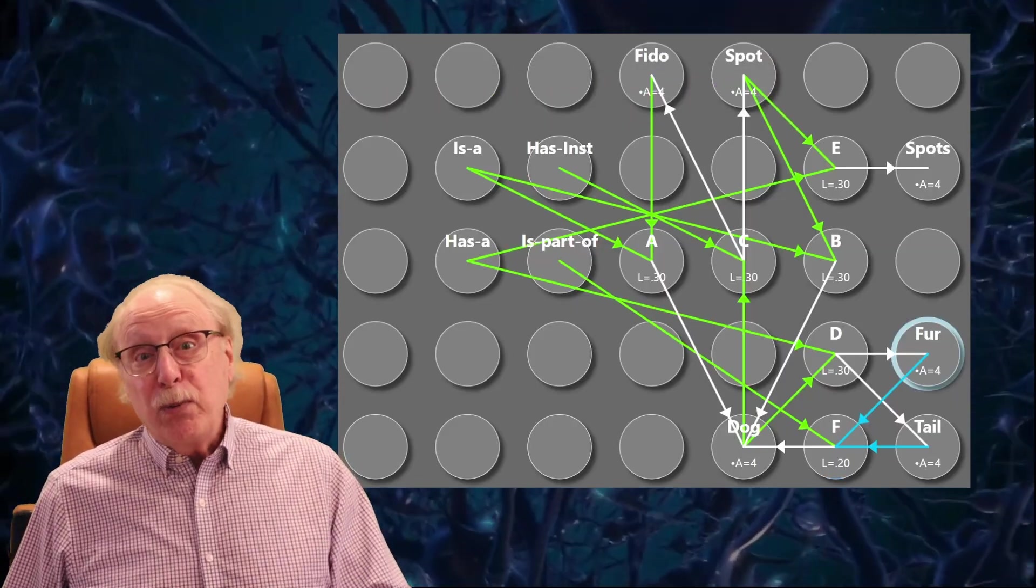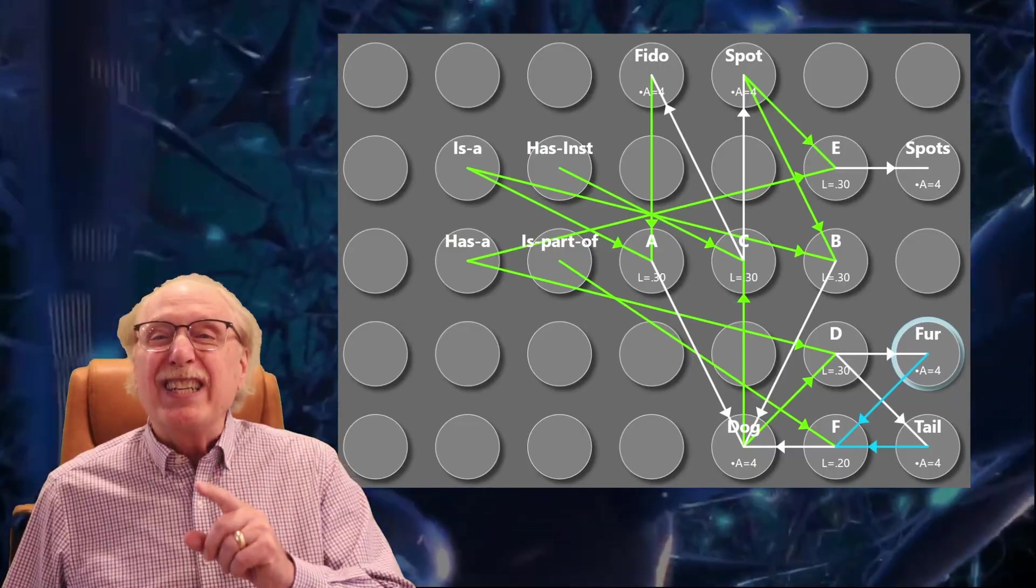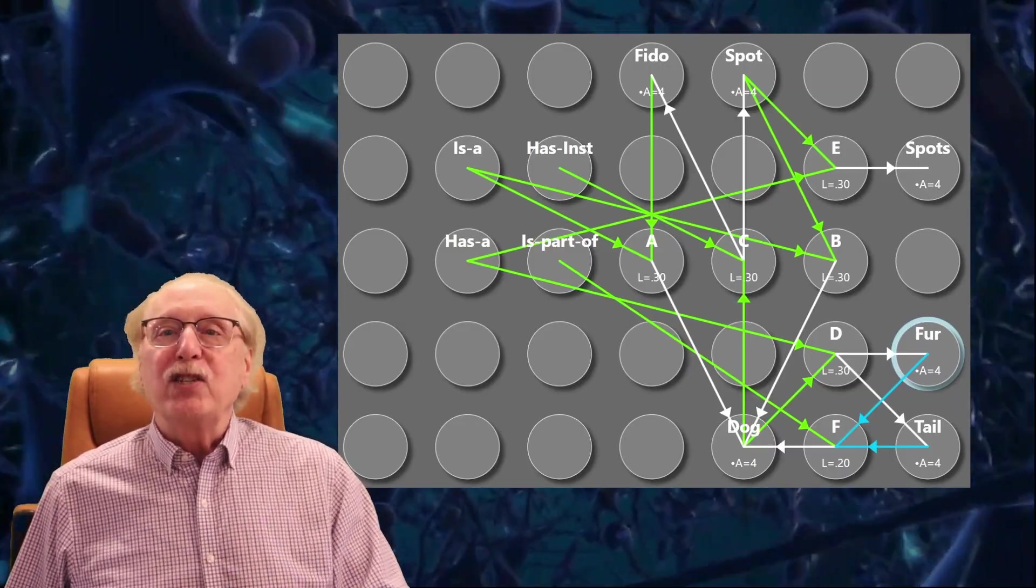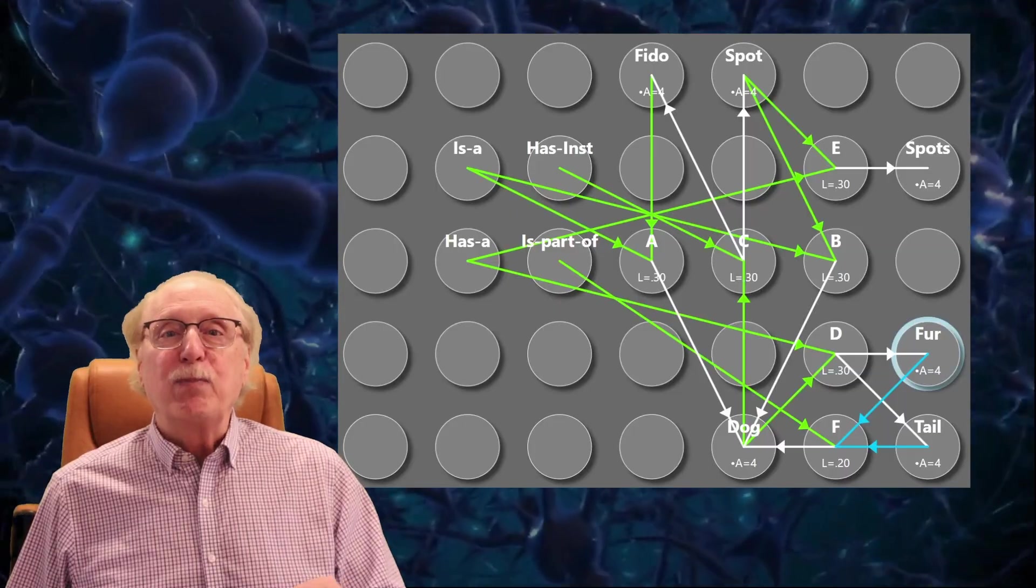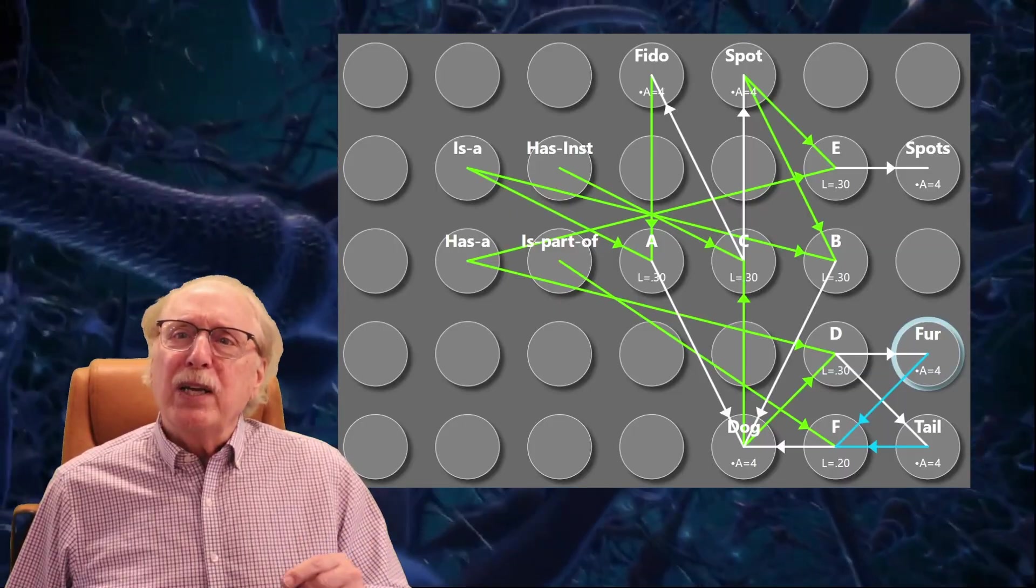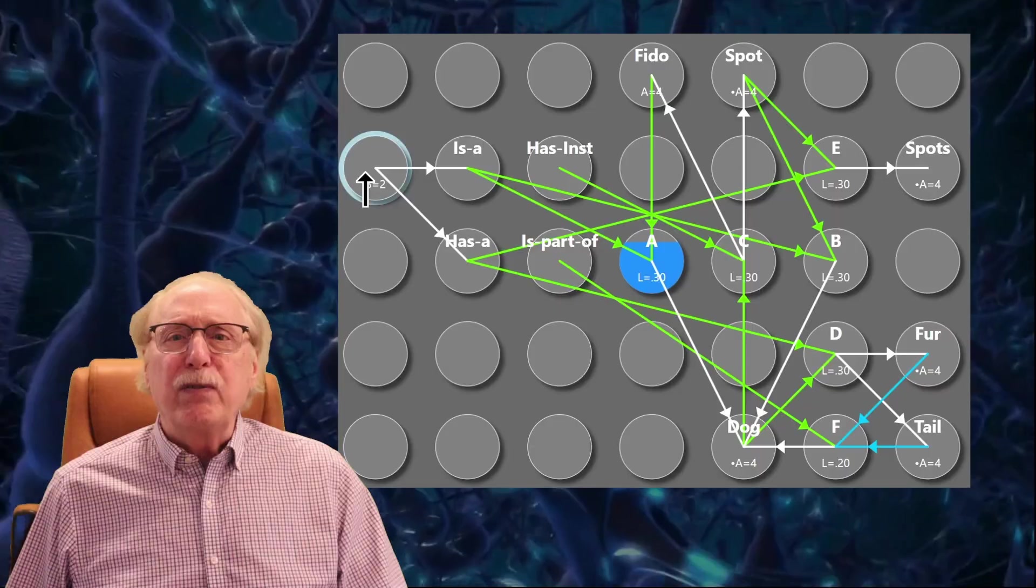As a further preview of coming attractions, watch this. This network can obviously tell us that Fido and Spot are dogs, but it can tell us some of the attributes of each.